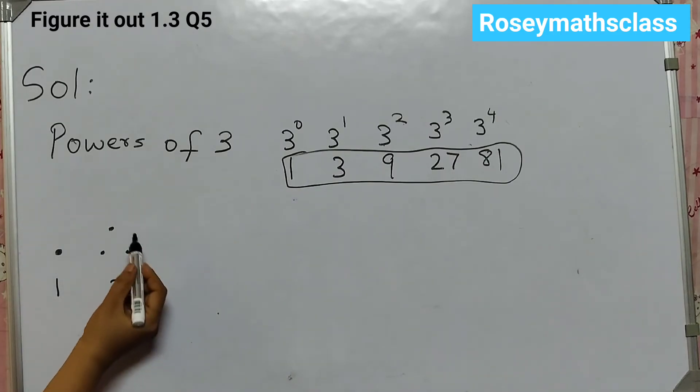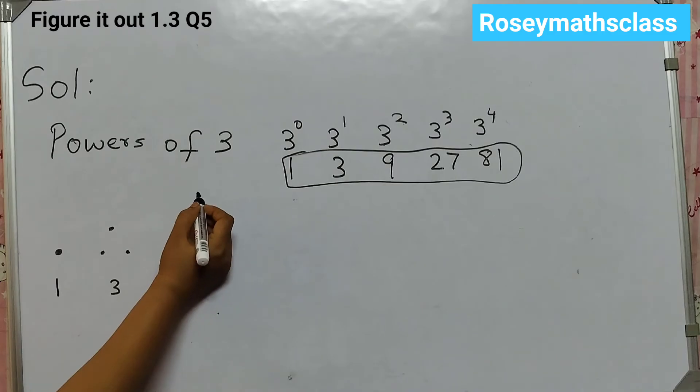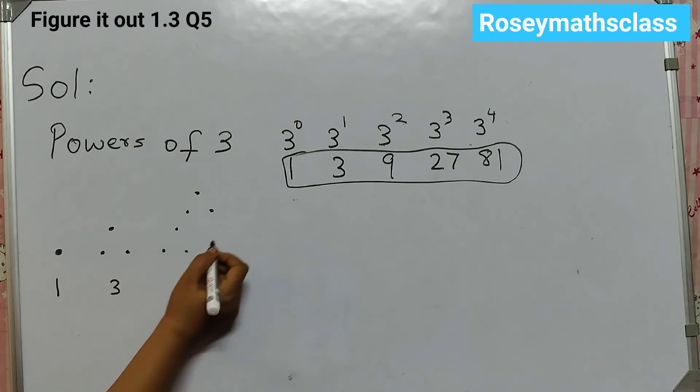Next number is 9. So you need to copy this 3 dots. 1, 2, 3. And then make 3 copies of this. So then 1, 2, 3. 1, 2, 3. So this will become 9.